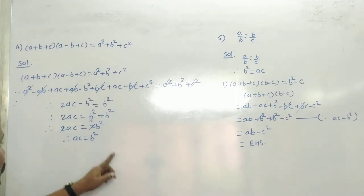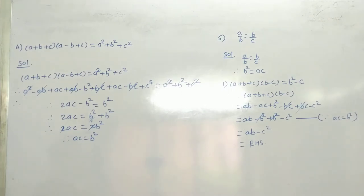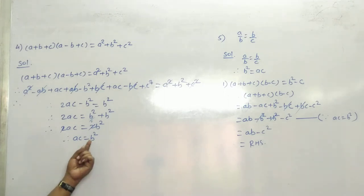AC is equal to B square, and B square is equal to AC — it's proved. समझ में आया? यही तुमको prove करना था — B square is equal to AC।